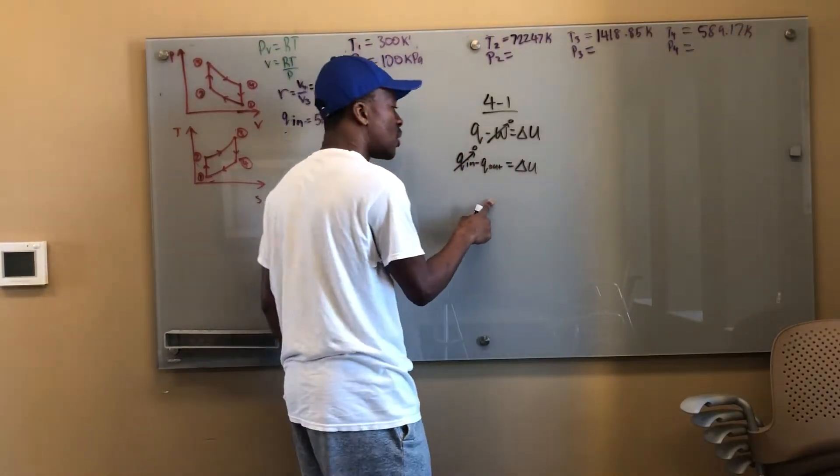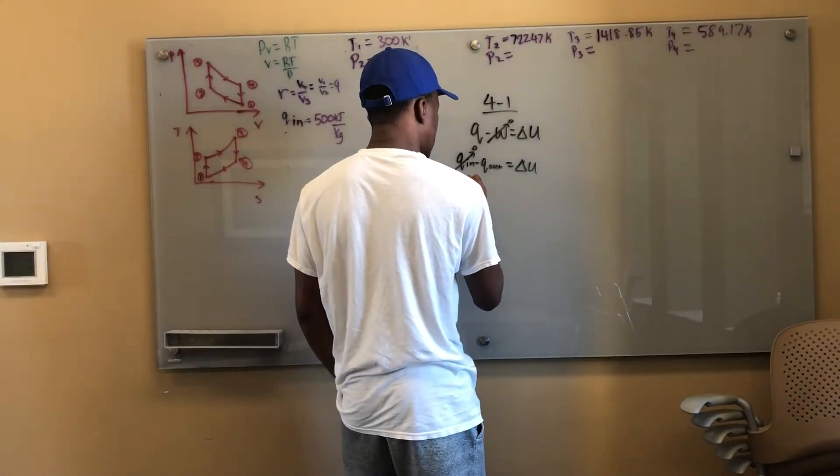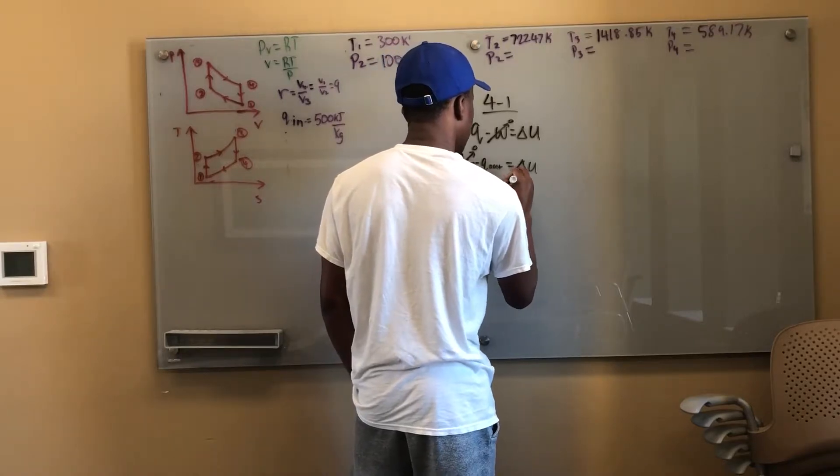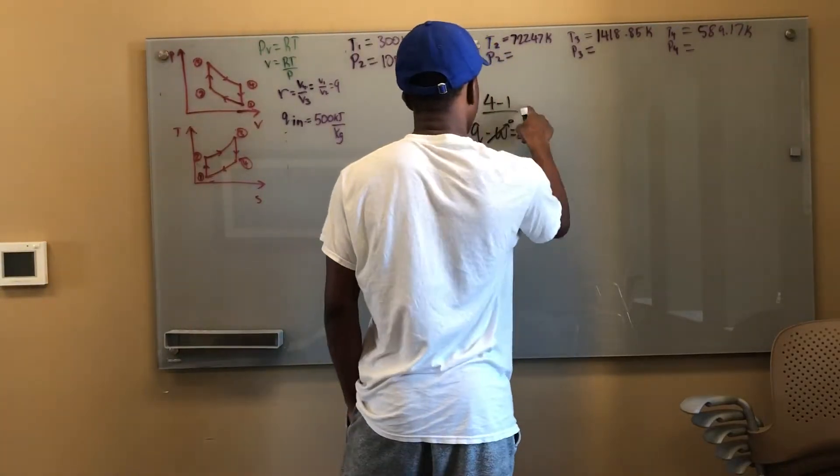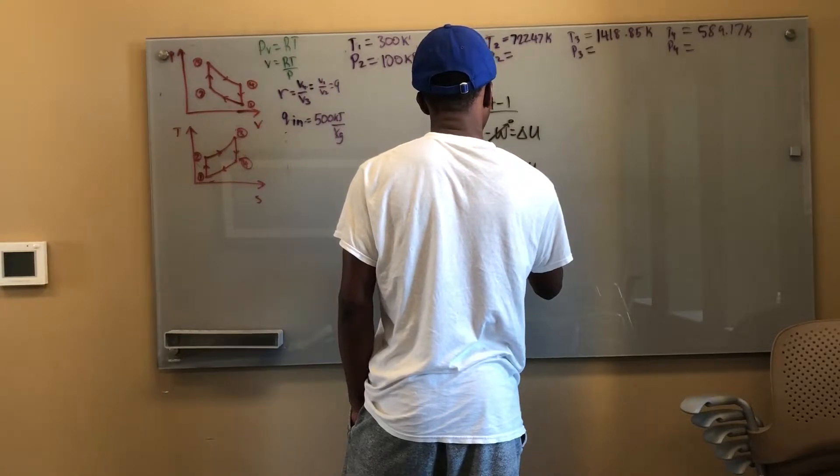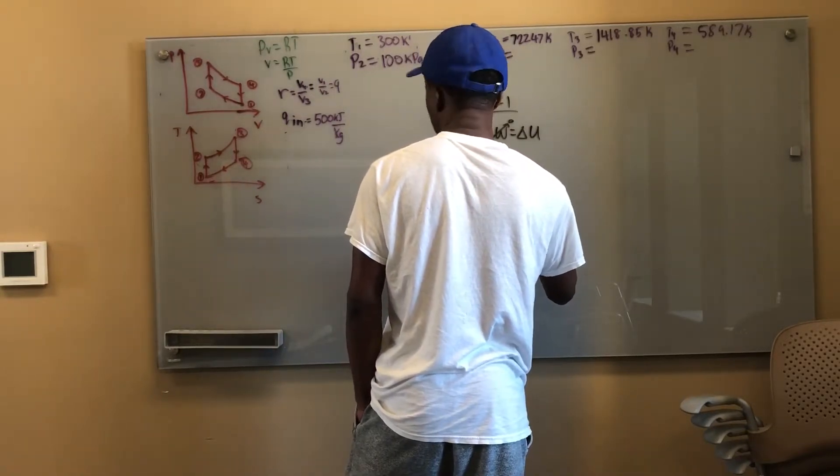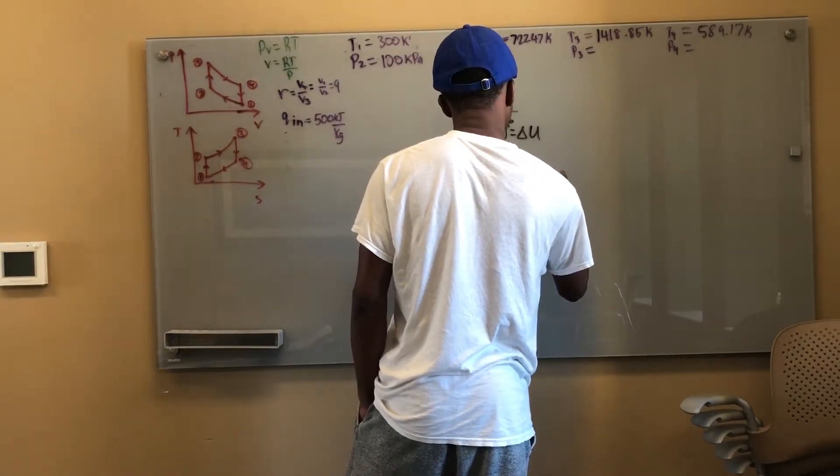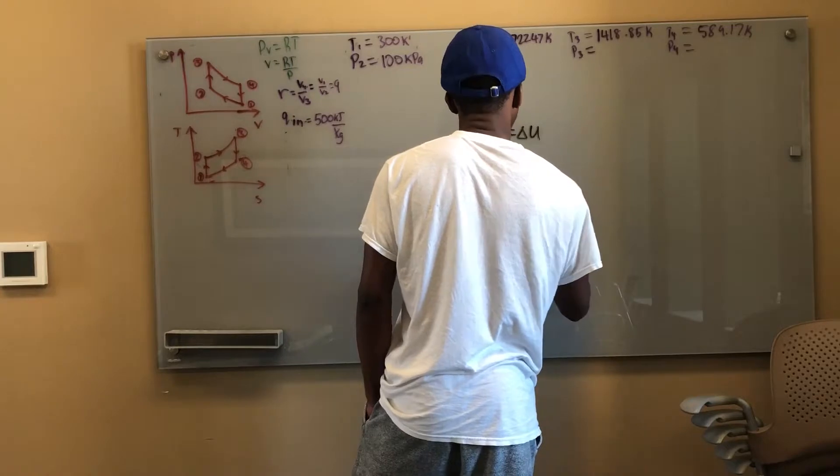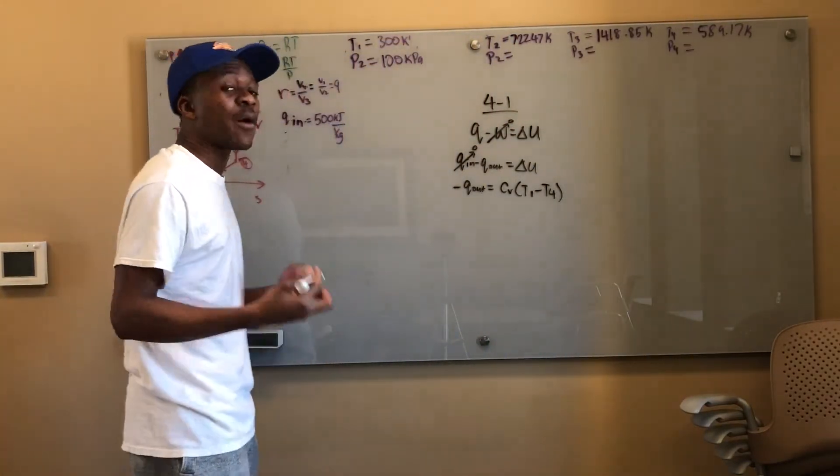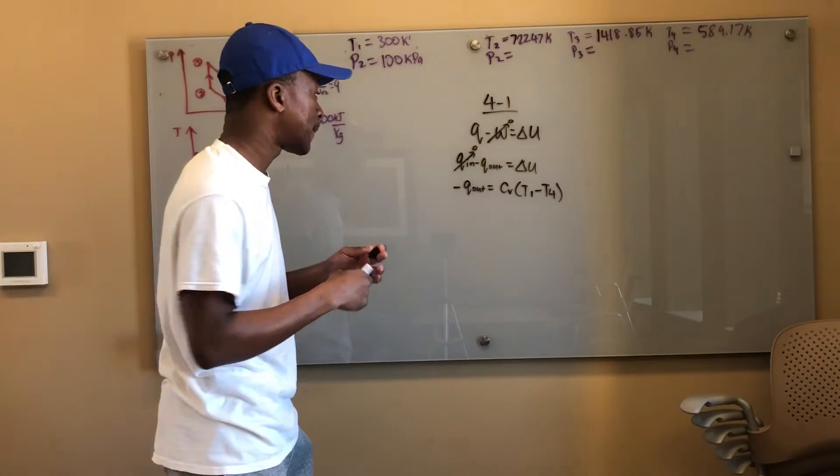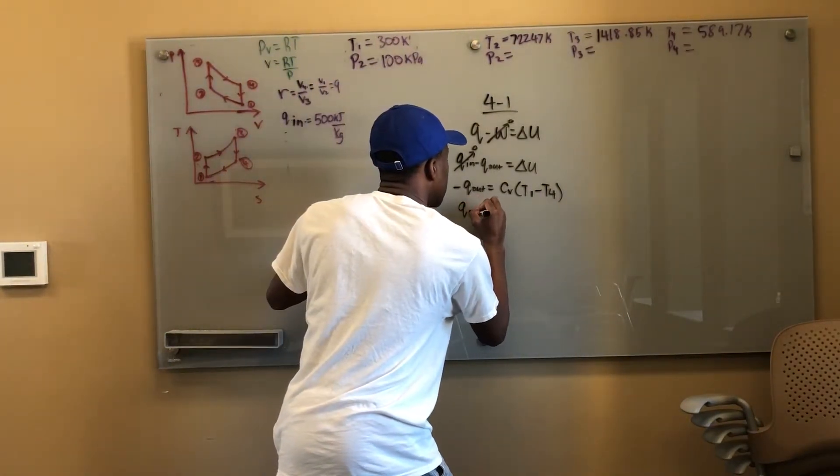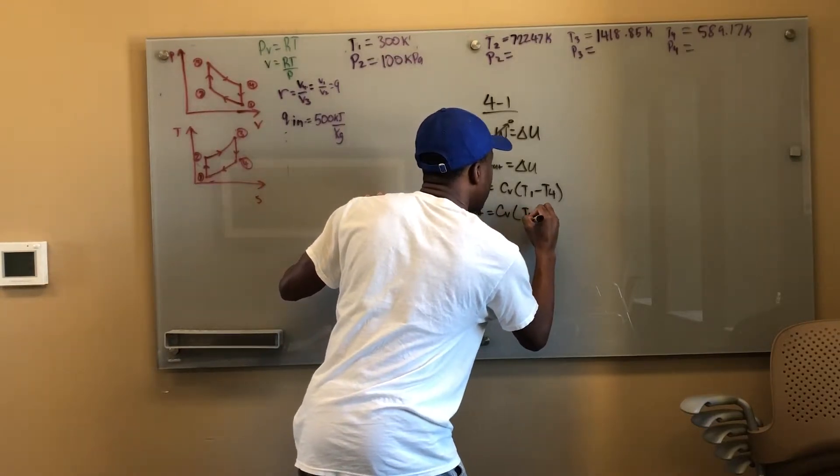So I've been given my Q_in. Now I just have to find my Q_out. When does Q_out occur? Q_out occurs from 0.4 to 0.1. So I have to observe 0.4 to 0.1. Let's just look at it as a closed system. Q minus W equals delta U. No work being done. This is actually Q_in minus Q_out equals delta U. This Q_in is zero because this is Q_net. Q_net is given by Q_in minus Q_out. So I have negative Q_out.